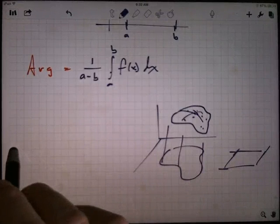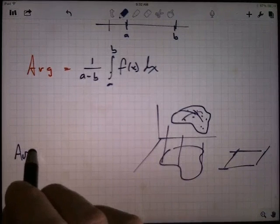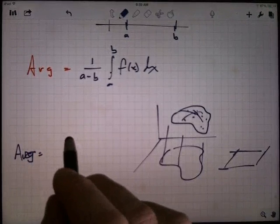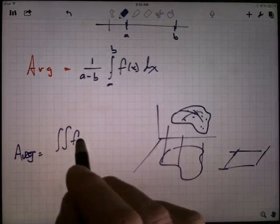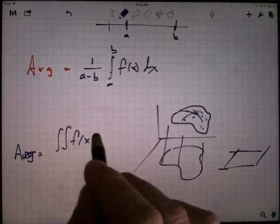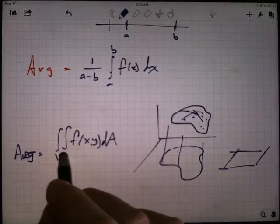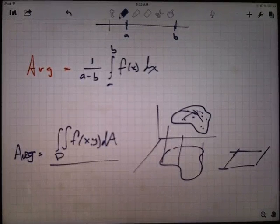So, here, the average value is, you're taking the volume, so you're integrating this function f(x,y) dA over the region D, and then you're dividing by the area.